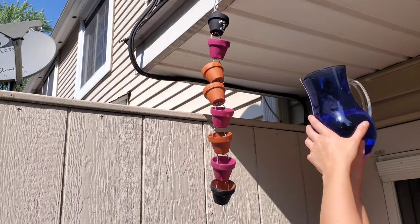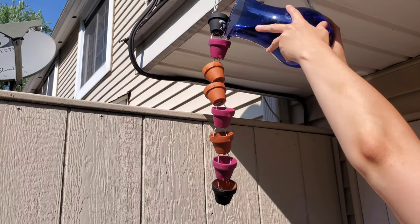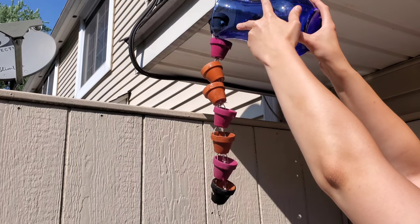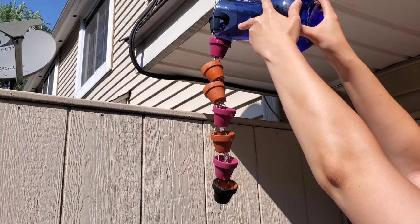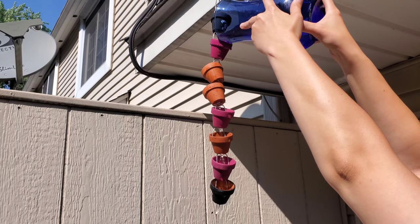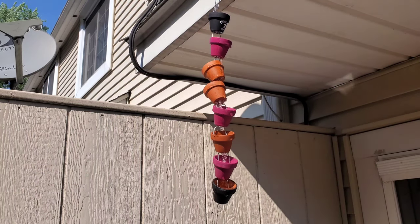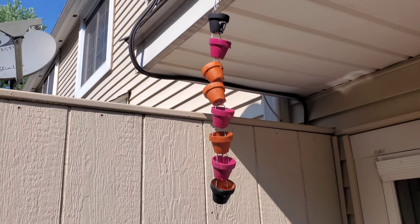Now you can hang this outside. When it rains, the water is going to flow through all of the holes and sometimes the sides. This rain chain is decorative, cute, and it can help redirect water and water your plants when it rains heavily outside.